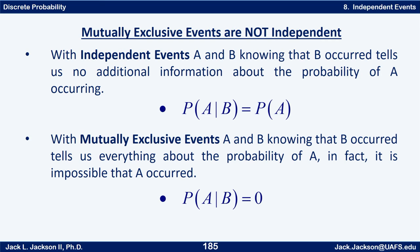Now mutually exclusive events are something completely different. Mutually exclusive events are disjoint sets — if you know that A occurred, then B cannot occur and vice versa. So P(A|B) is actually zero, which is probably not the same as P(A). This means mutually exclusive events are most definitely dependent events — not independent. Some students get these two concepts confused, but mutually exclusive events are never independent events.